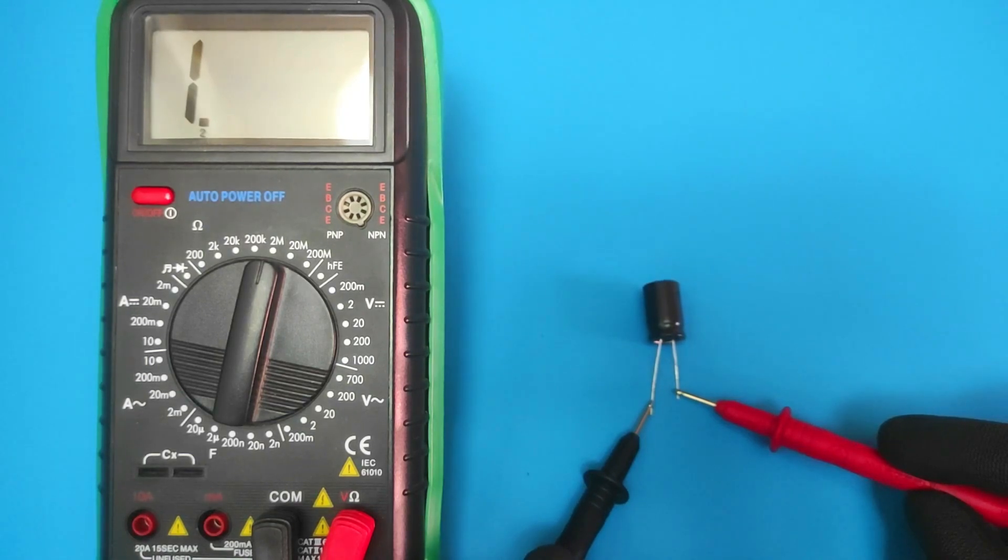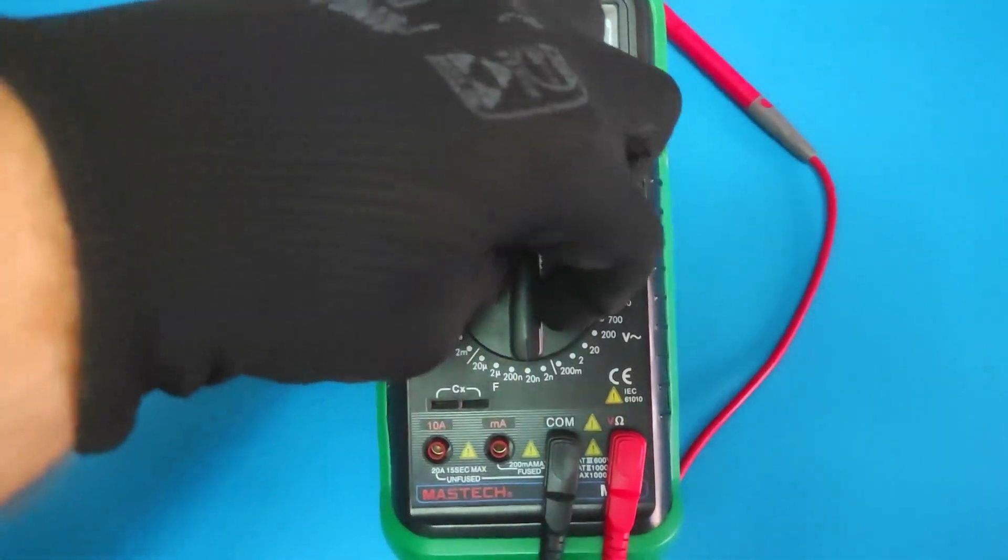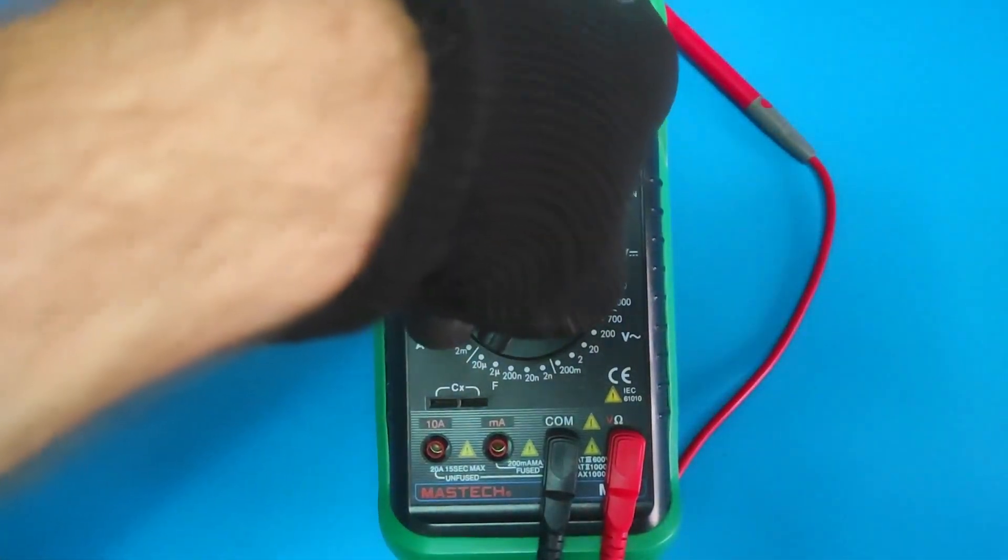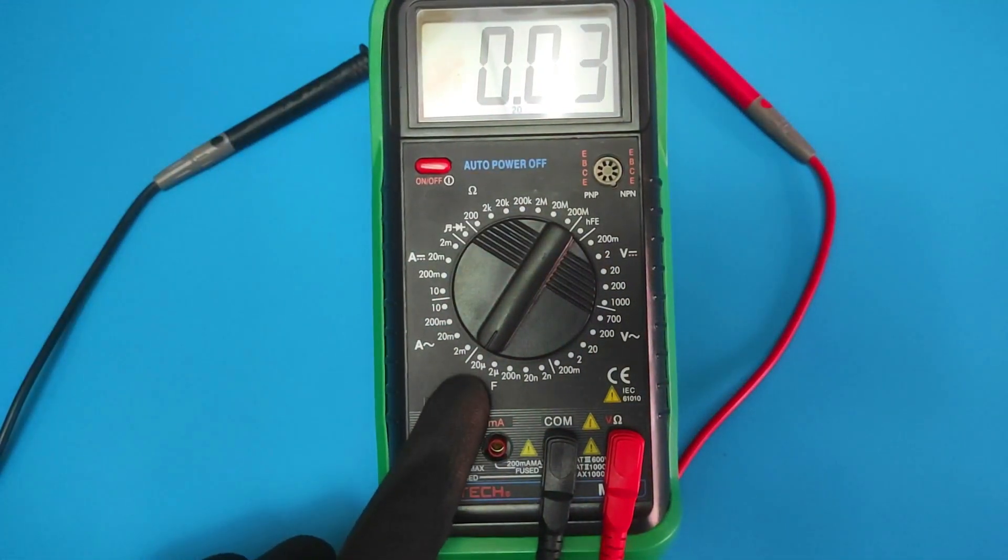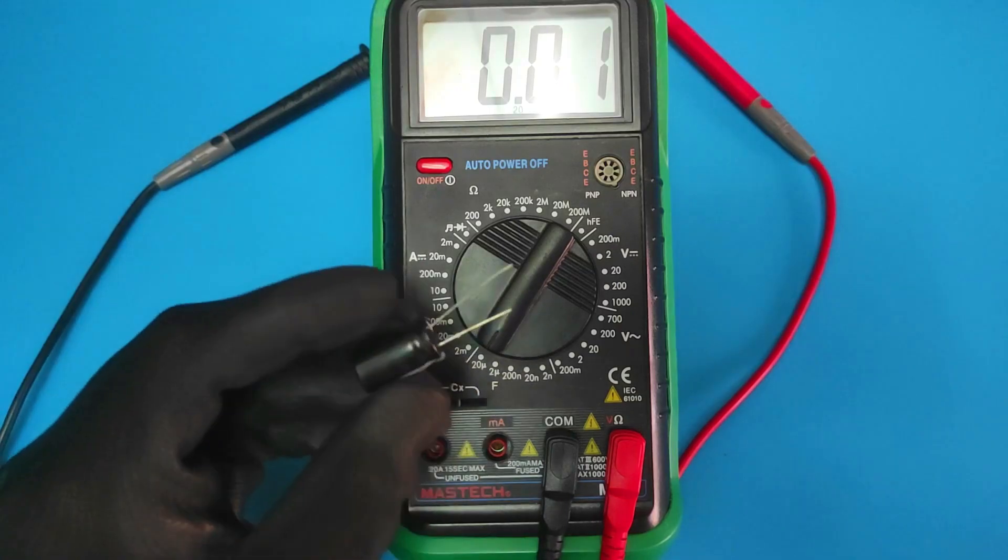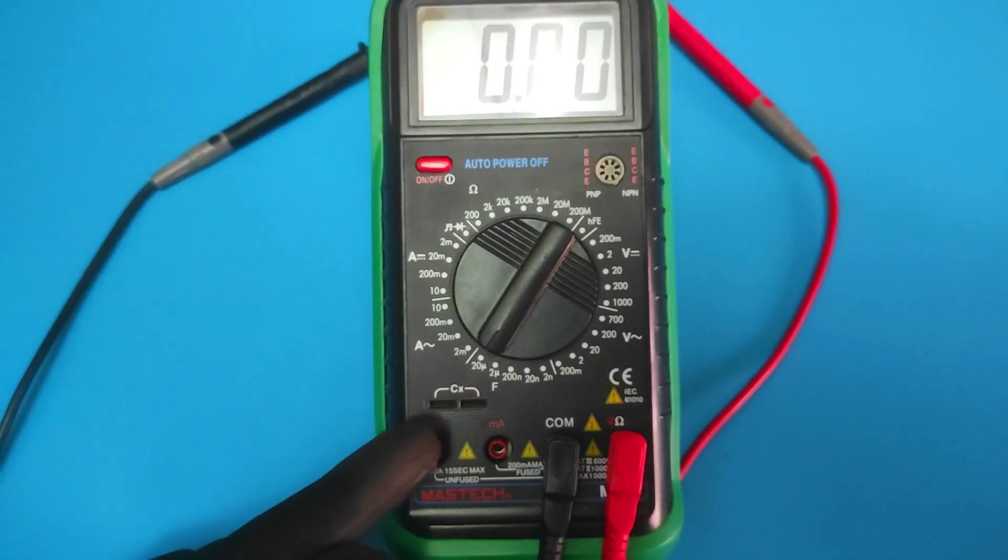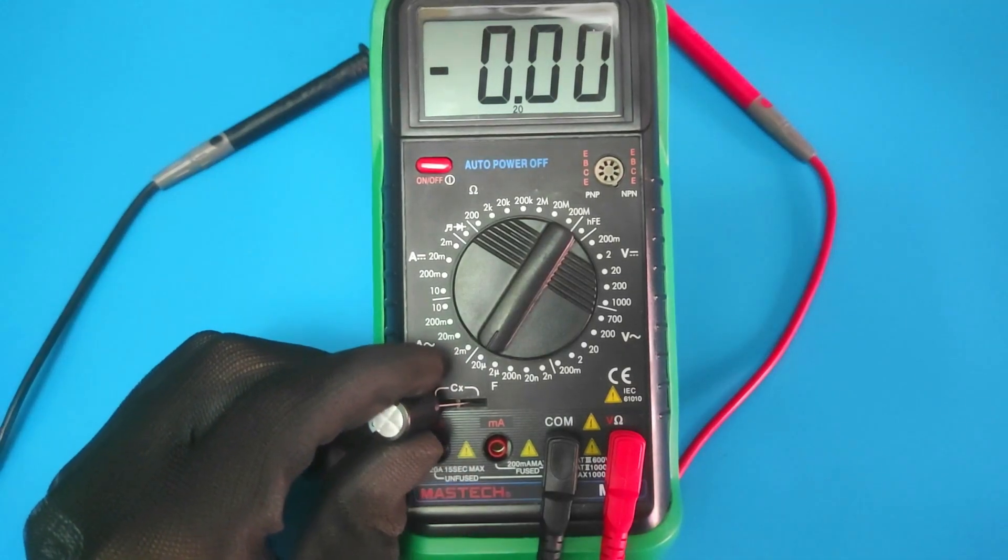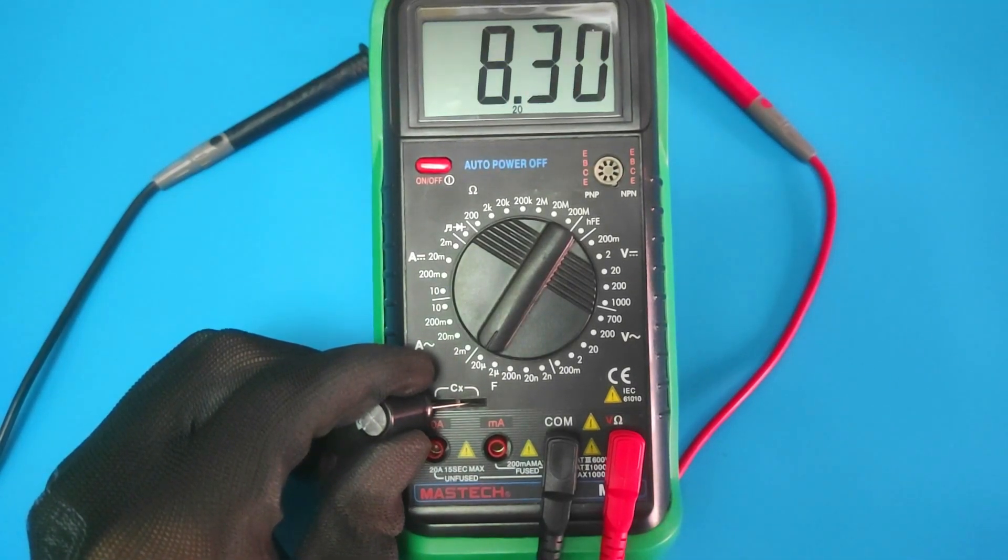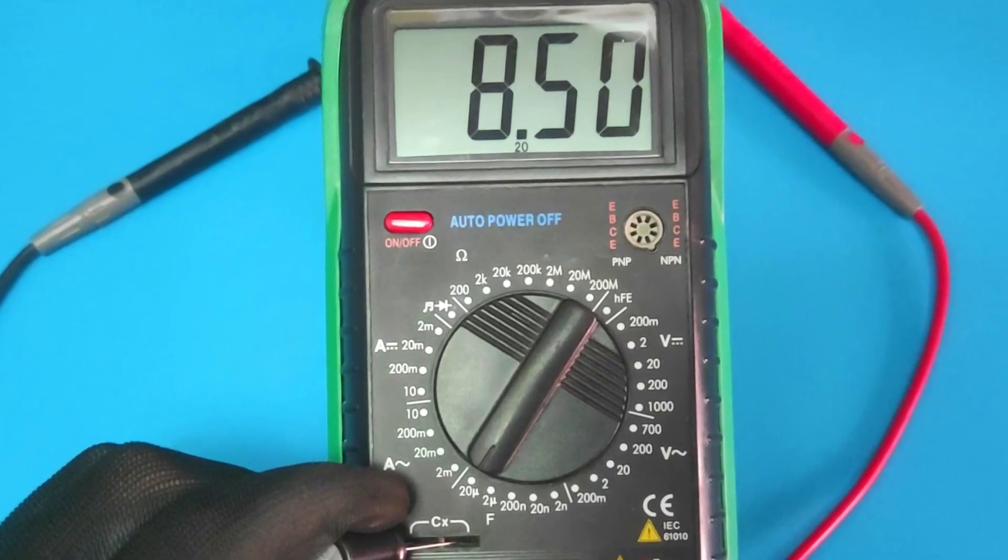Let's see the capacitance test. For the capacitance test, you need to set a larger capacitance value than the capacitor. This capacitor has a value of 10 microfarads, so we put 20 microfarads on the multimeter. And be sure to discharge the capacitor before this test. Simply connect the capacitor to the multimeter, and as we can see, the capacitance test is good.